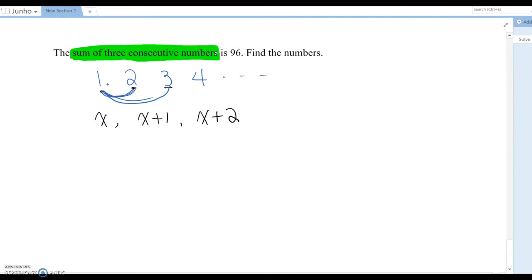Okay, now the sum is 96, so you can set up x plus x plus one, plus x plus two, equal 96. Now, open the parentheses, then x plus x plus one, plus x plus two, equal 96.